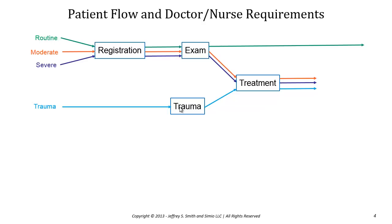We have different priorities, as you would expect, for each patient type — trauma patients have the highest priority, severe patients are second highest, followed by moderate and routine patients.